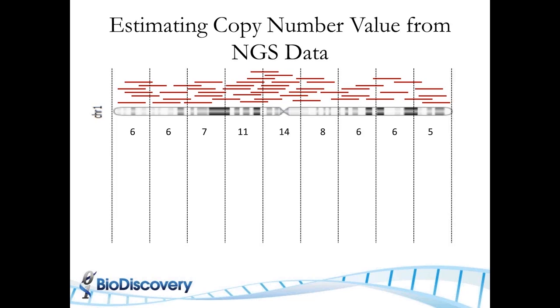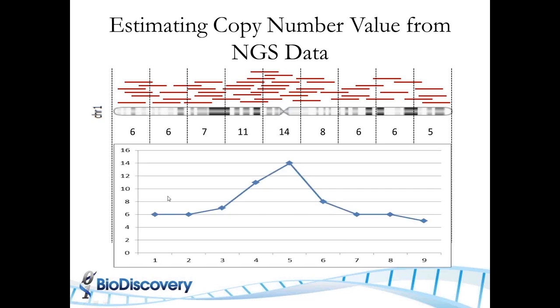If you bin up the genome into multiple bins and count, so we have six reads here, six reads here, seven, and so on and so forth, and you plot that, let's say you have 6X coverage on average and you end up with 14, so this part might be a gain, again, if you have corrected for biases.